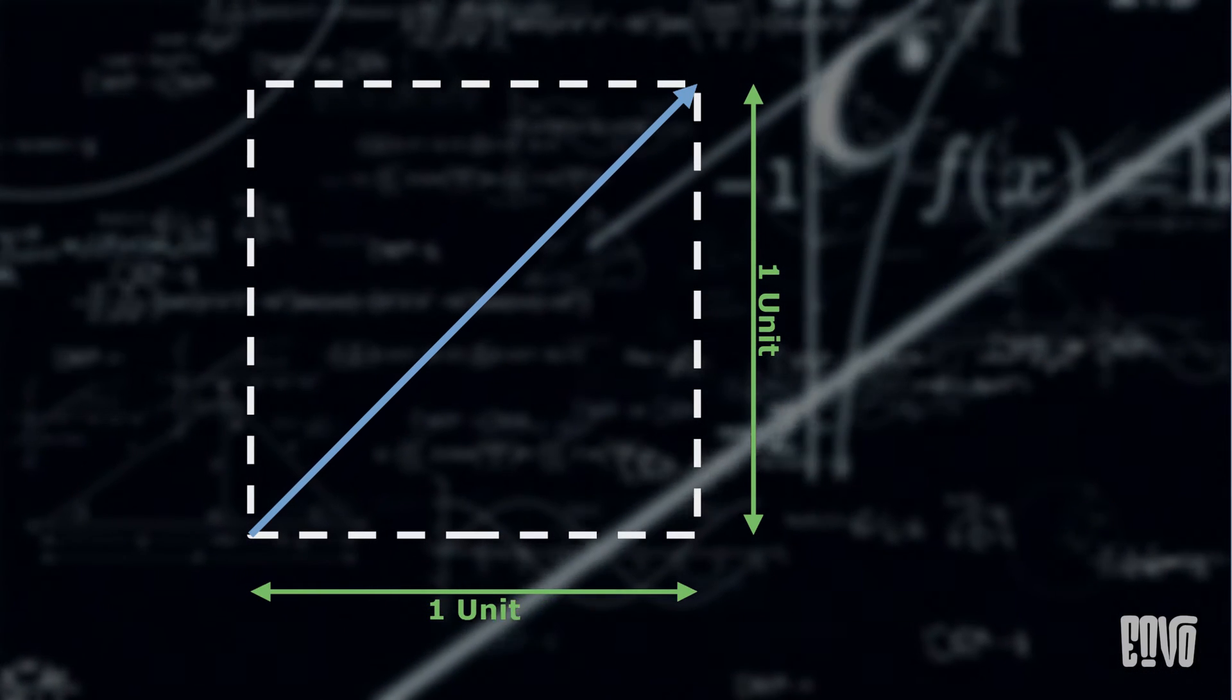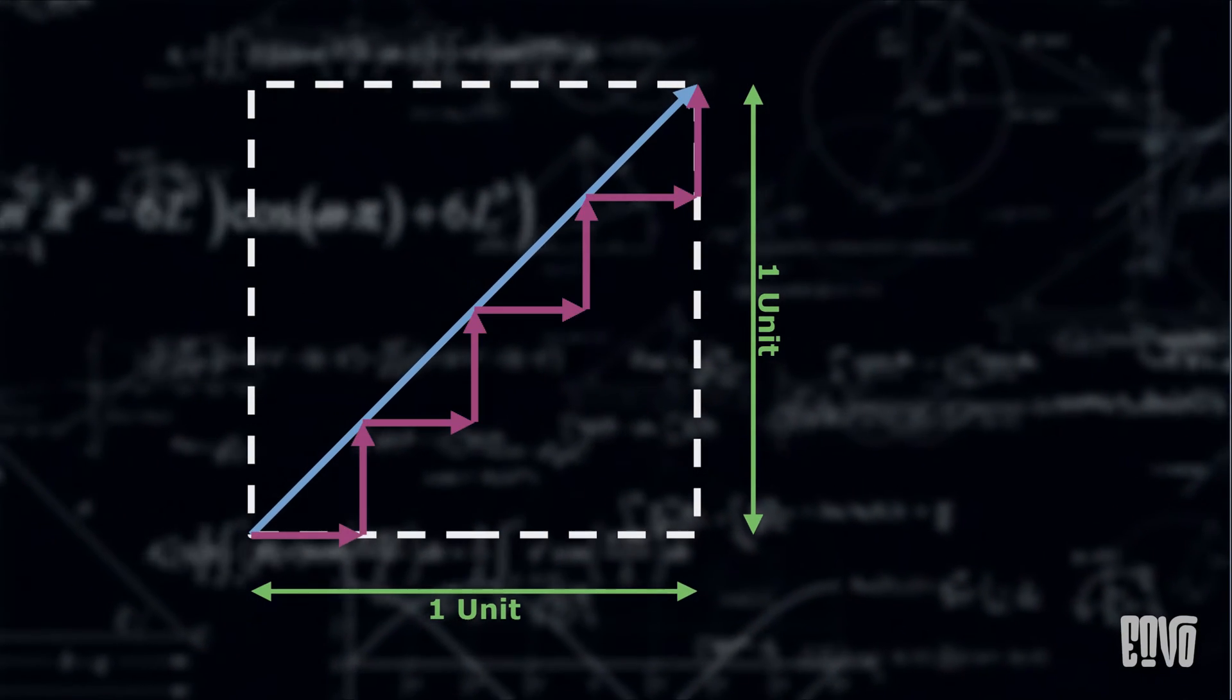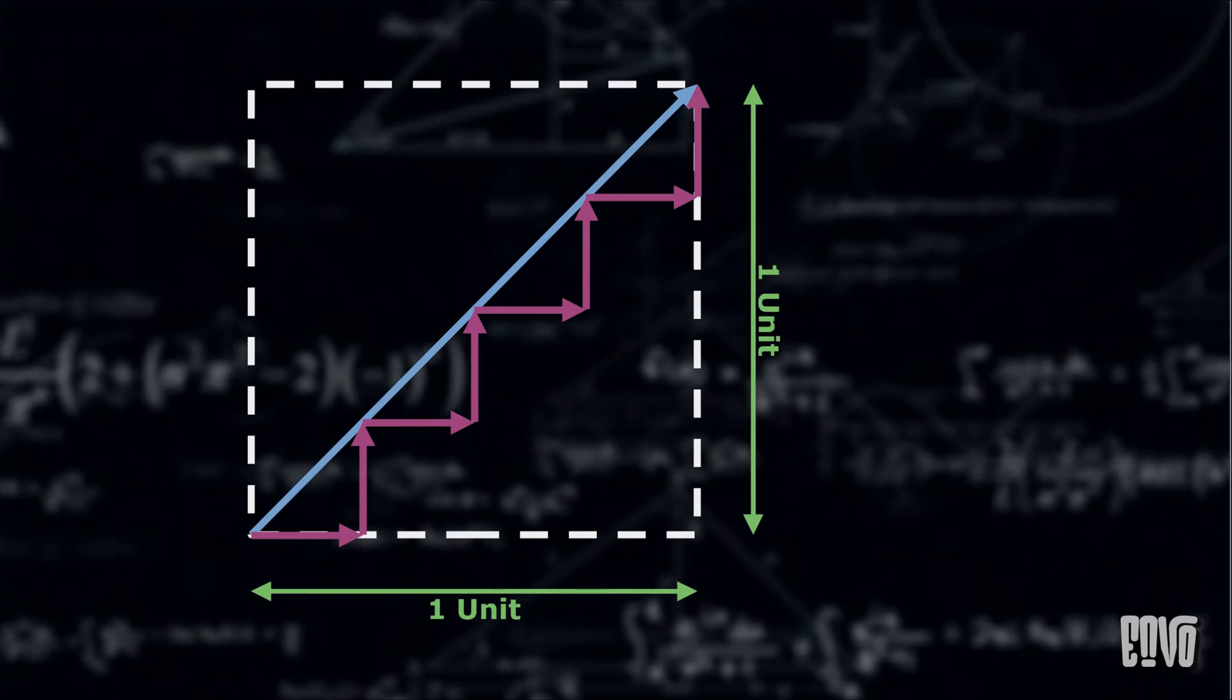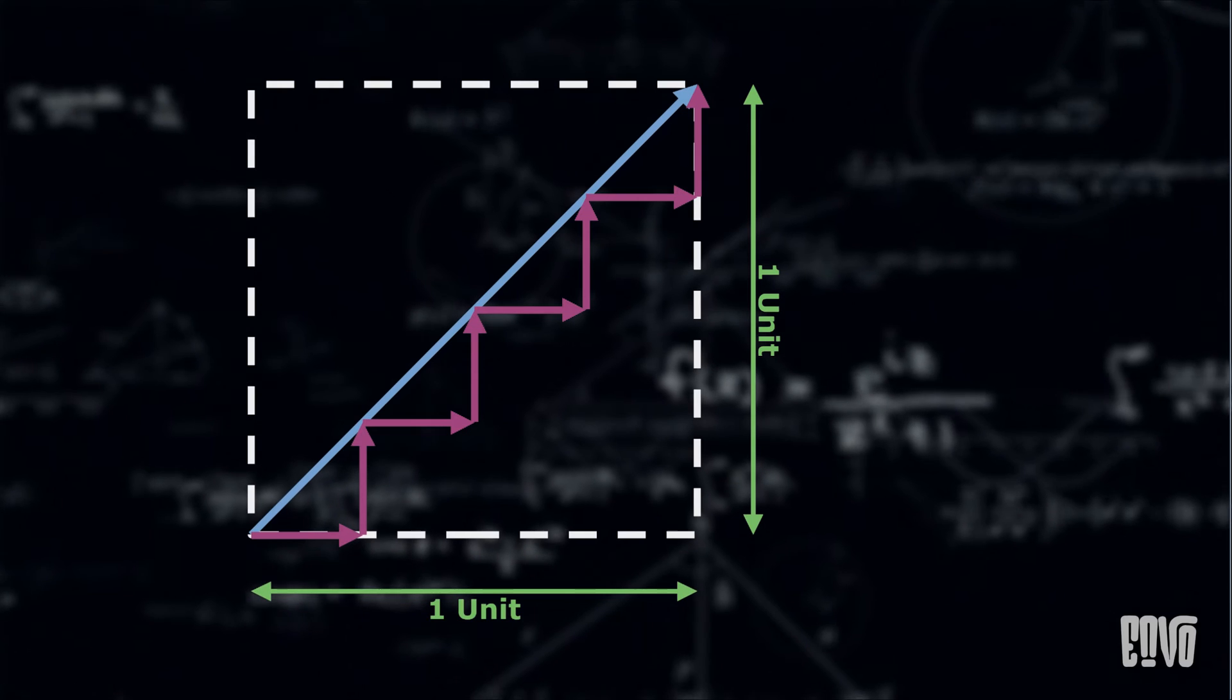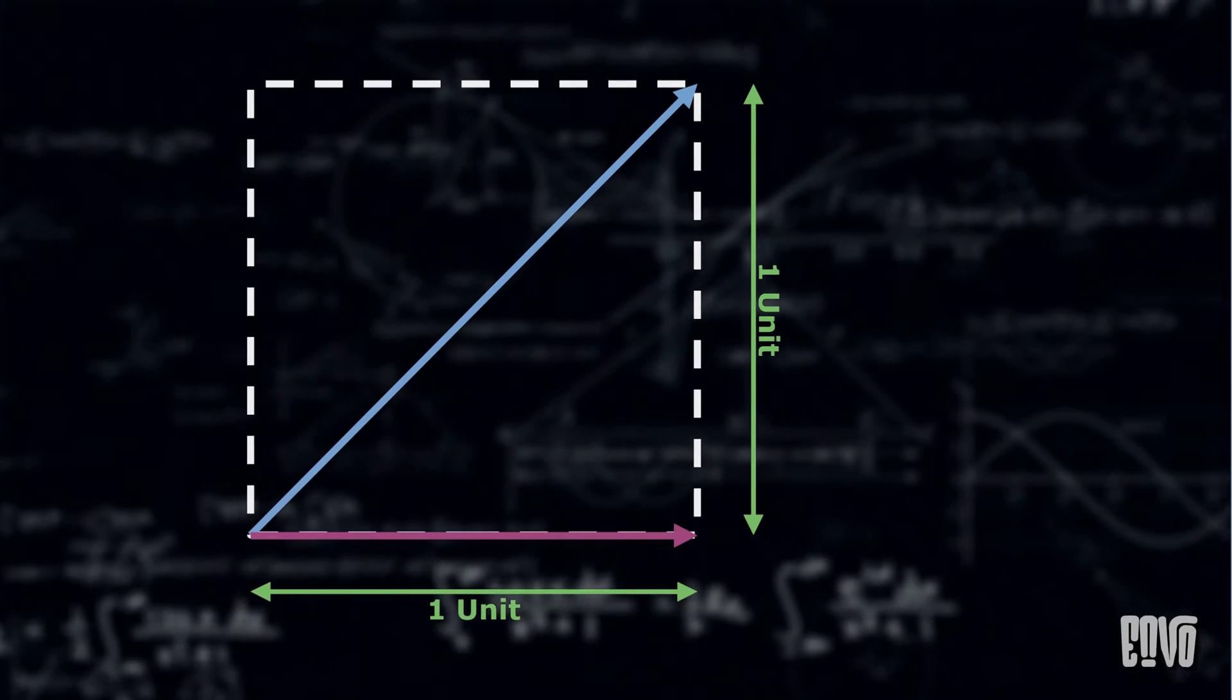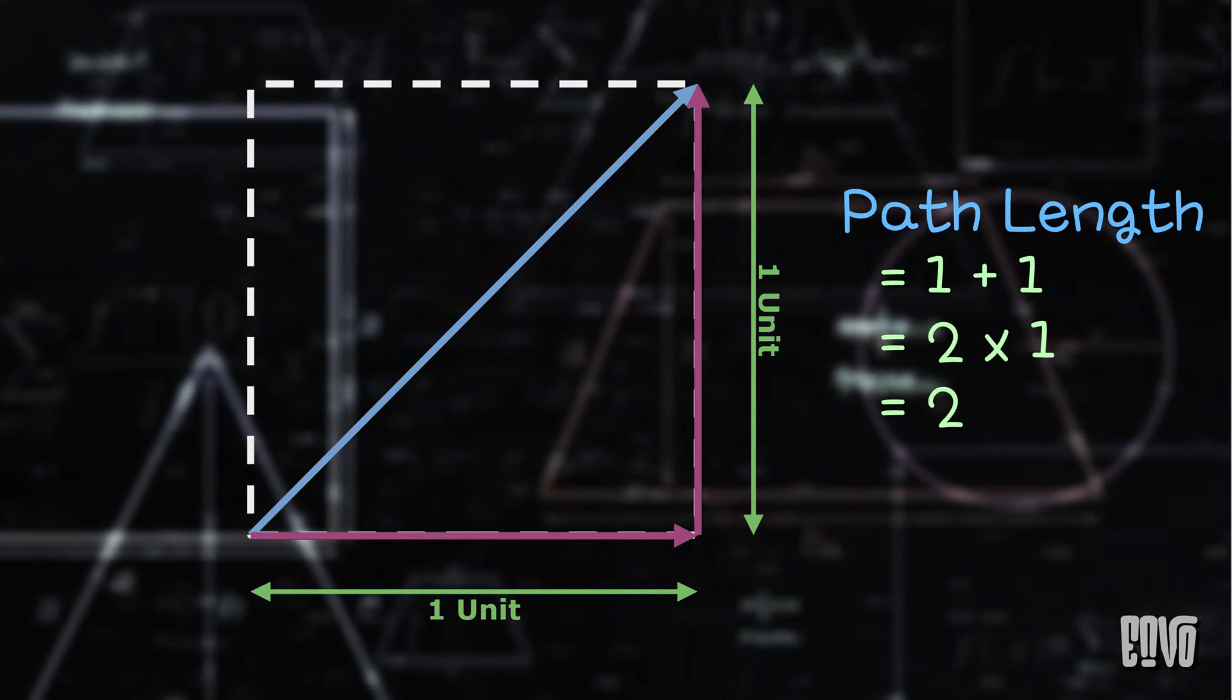Simple, right? Now, let's try a different approach. Instead of a direct diagonal, let's build a staircase. We'll take small steps, alternating between moving horizontally and vertically. Imagine taking one unit right, and then one unit up. The total path length is 1 plus 1 equals 2 units.